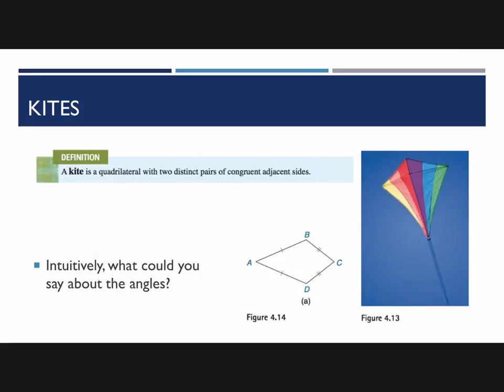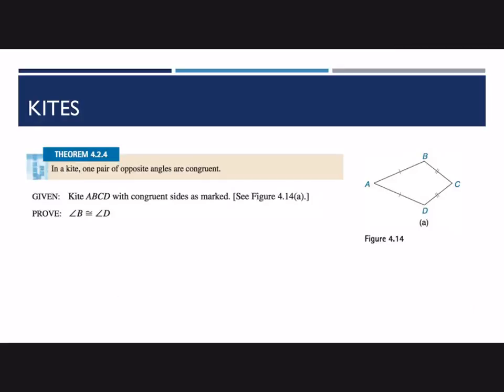So let's actually prove some facts about kites. The first theorem: in a kite, one pair of opposite angles are congruent. In this figure, angles B and D are congruent to each other. So how do we go about proving this? This is based on triangle congruence proofs, similar to ones we did for parallelograms. The first thing we need to do is construct diagonal AC, and then our strategy is to prove that those two triangular halves of the kite are congruent.